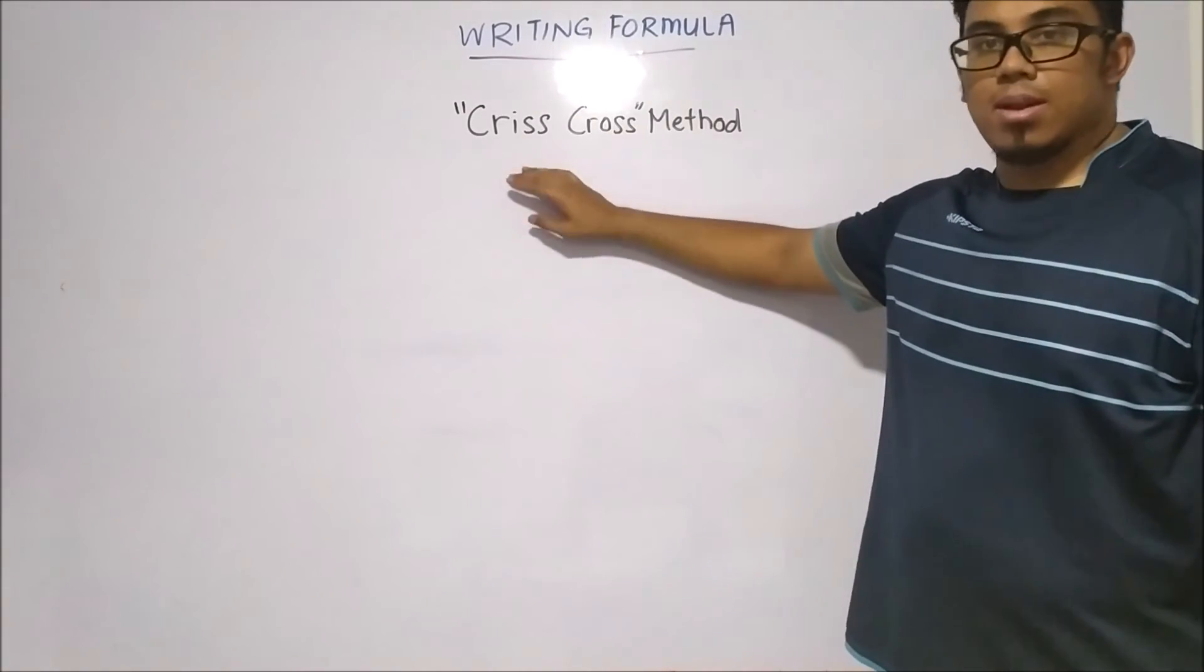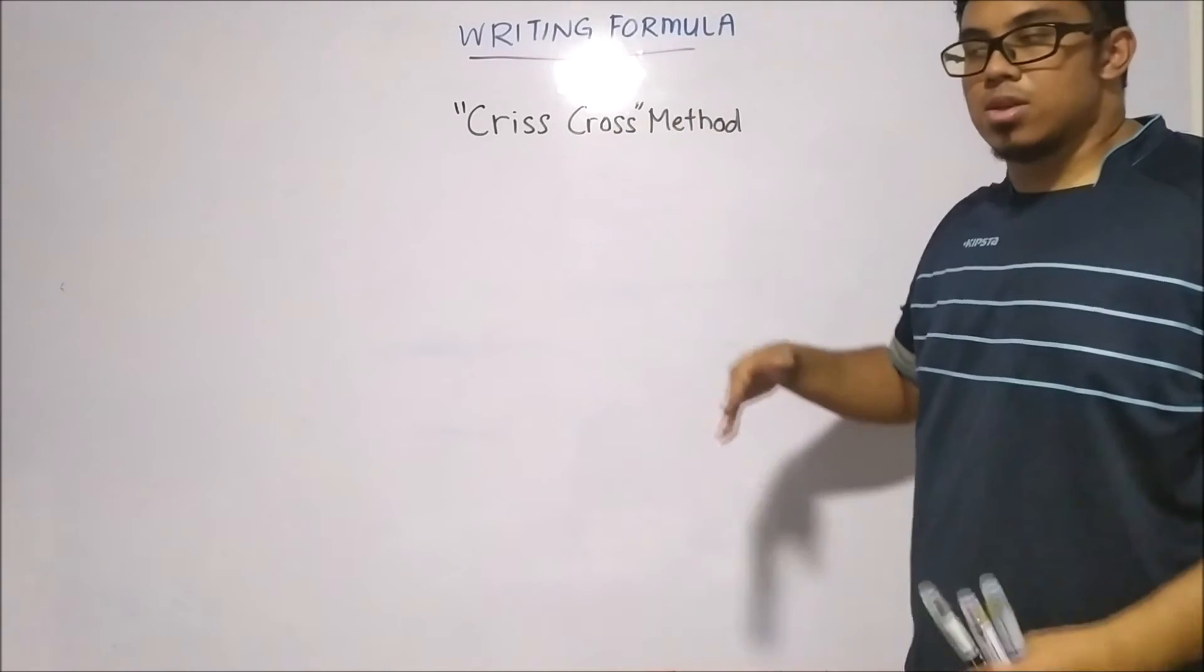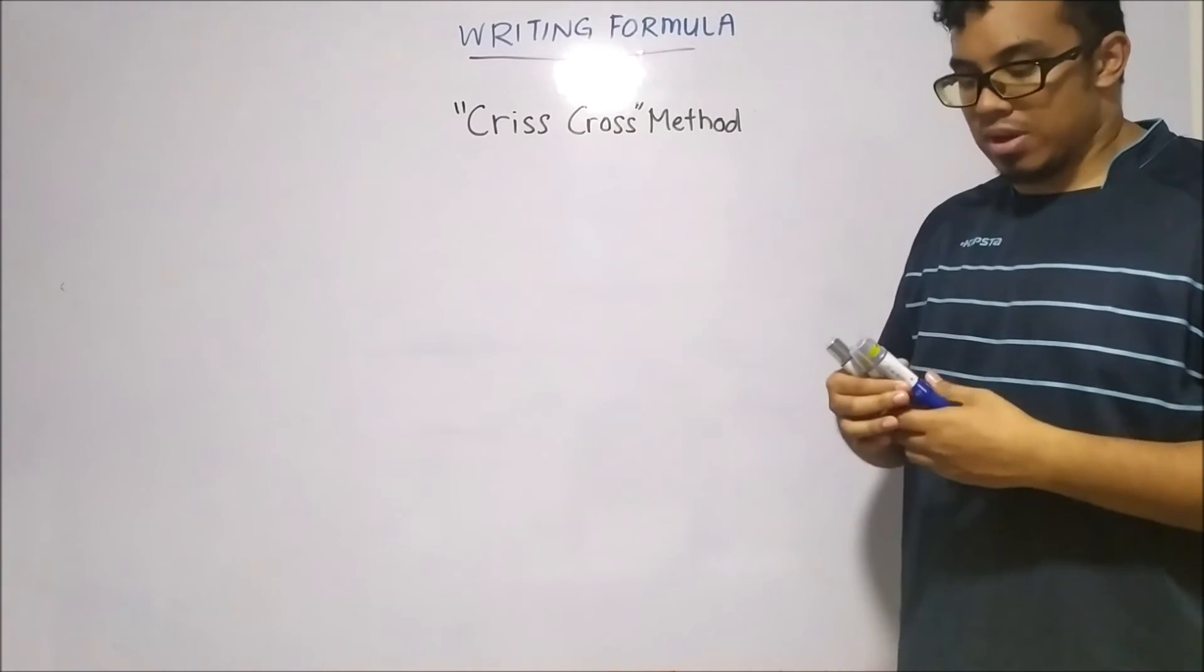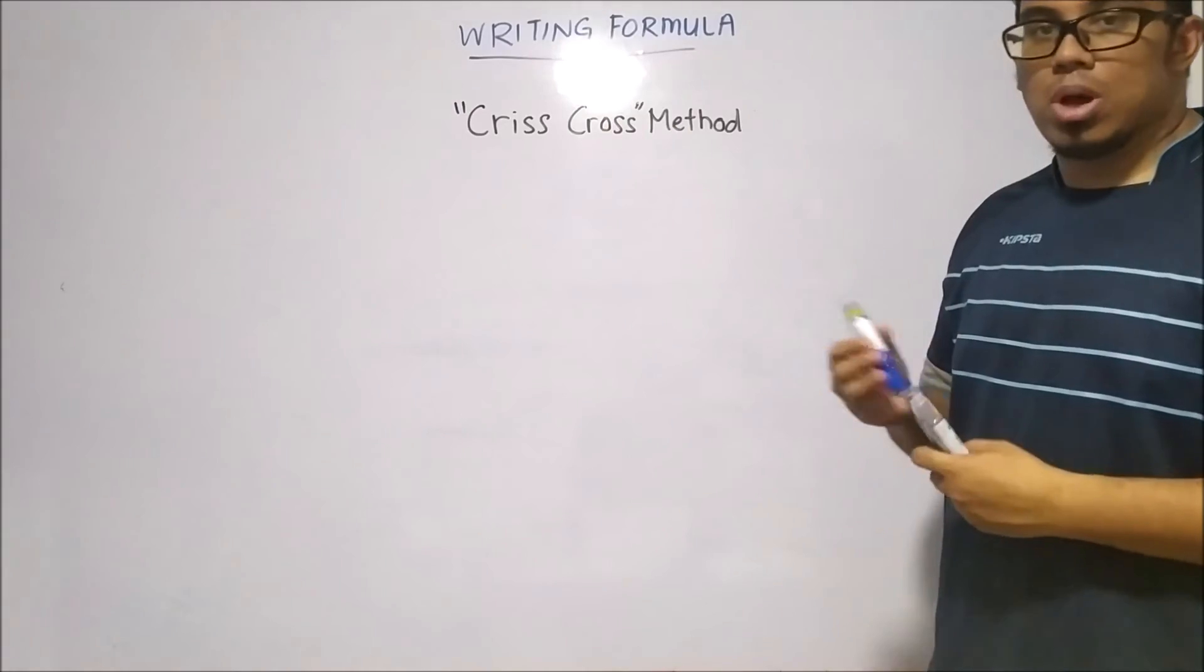Now I'll introduce you to a different method. It's called a criss cross method. It's a shortcut for us to find out the formula of an ionic compound. Let me show how it works.